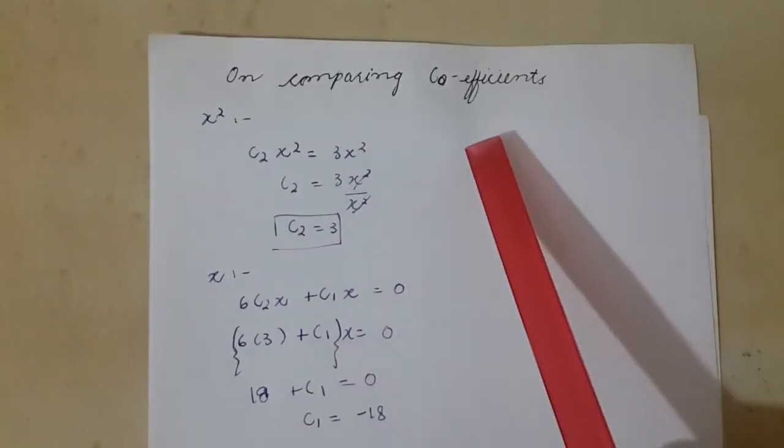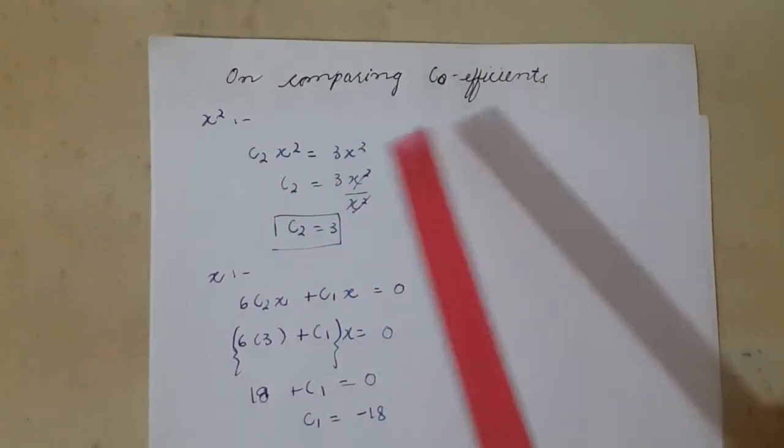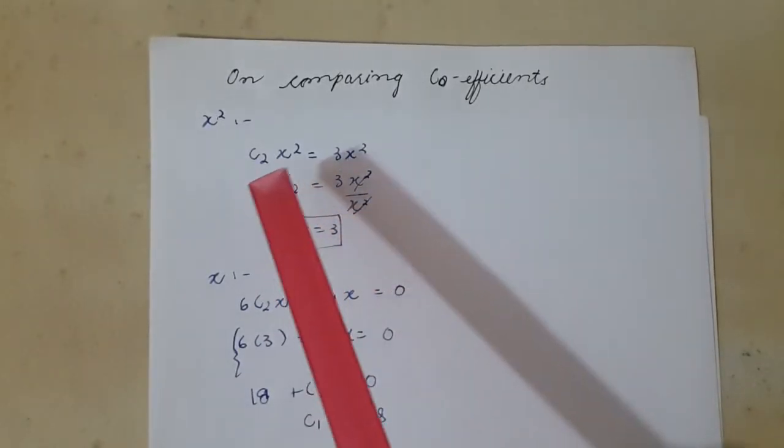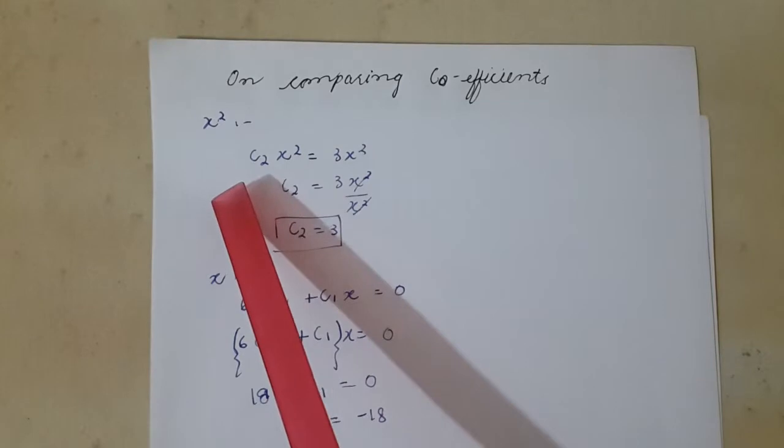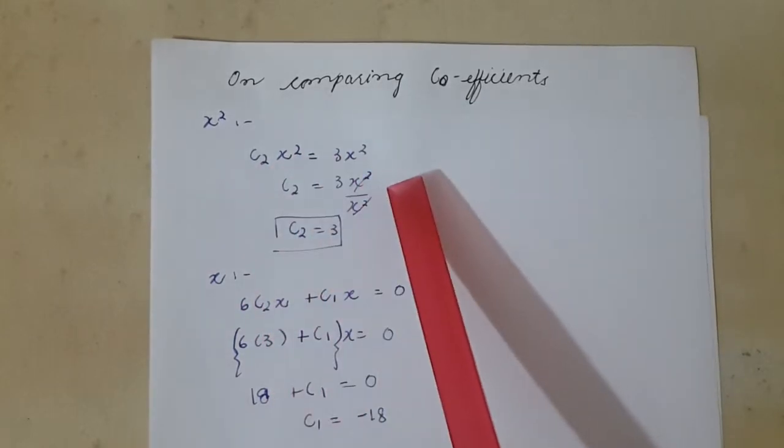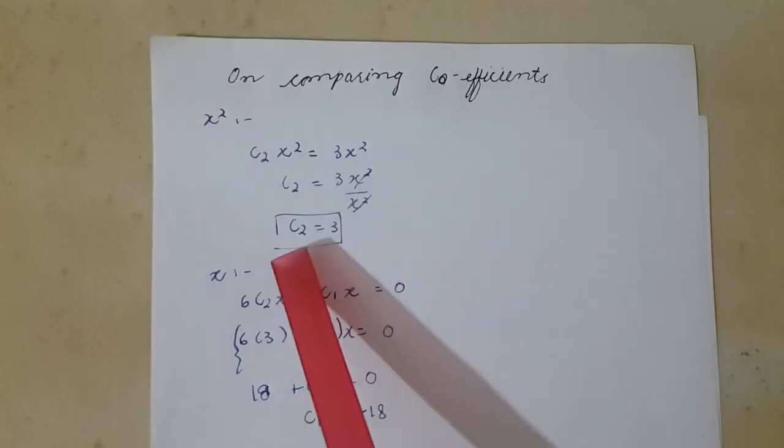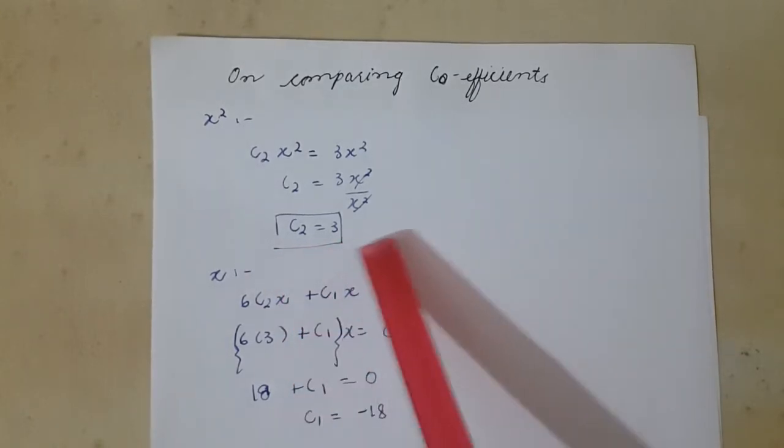On comparing coefficients, first I will compare x². The only term which consists of x² is c2·x² = 3x². x² will simply divide by x² and we get c2 = 3.